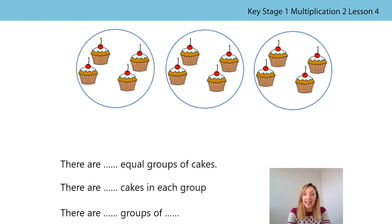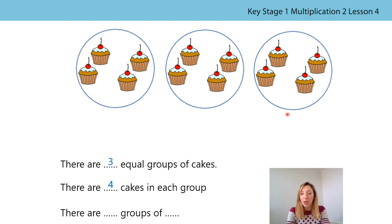Here are some more cakes. The cakes have been grouped. Can you have a go at filling in my sentences and putting the correct numbers in? I've left them blank. Press pause on the video and have a go. How many equal groups are there? Fantastic — there are three equal groups of cakes. And how many cakes are in each group? There are four cakes in each group. Amazing. Can you count the groups with me now? One group of four, two groups of four, three groups of four. Fantastic counting — there are three groups of four. Brilliant.